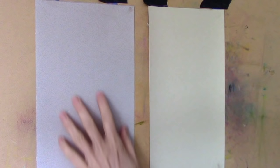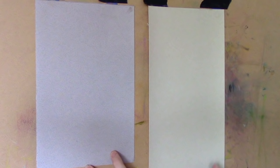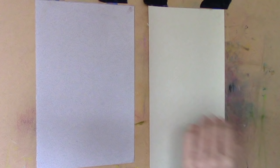Okay, so here I have Canson Mi-Teint, and here I have UART 400 grit. So I wanted to show it to you on the sort of smoother Canson and the more sanded paper, the UART paper, and I'm going to be using Mount Vision pastels.